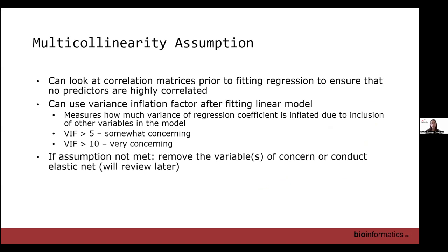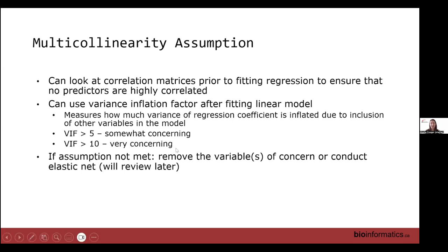For the multicollinearity assumption, we assume predictors in the model are not highly correlated with one another. One way to check this is to look at correlation matrices prior to fitting the regression and look for very high correlation values, like above 0.8. We can also use variance inflation factors (VIF) after fitting the linear model — VIF measures how much the variance of a regression coefficient is inflated due to inclusion of other variables. Rough guidelines: VIF greater than 5 is somewhat concerning, and VIF greater than 10 is very concerning, indicating high multicollinearity.